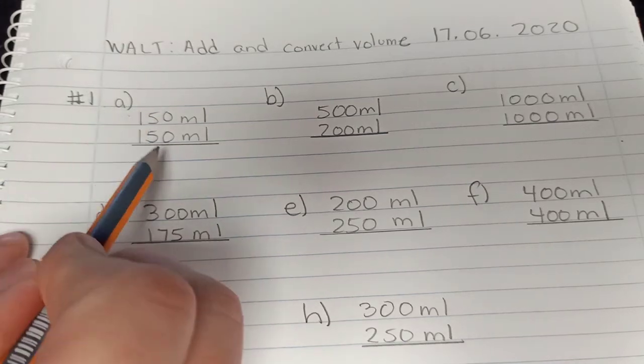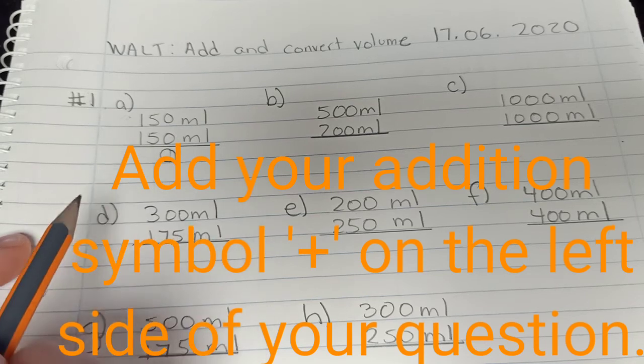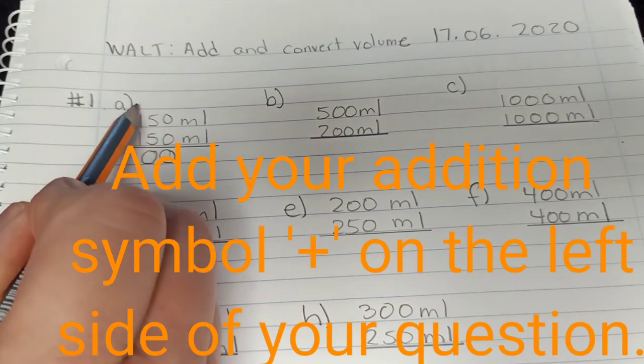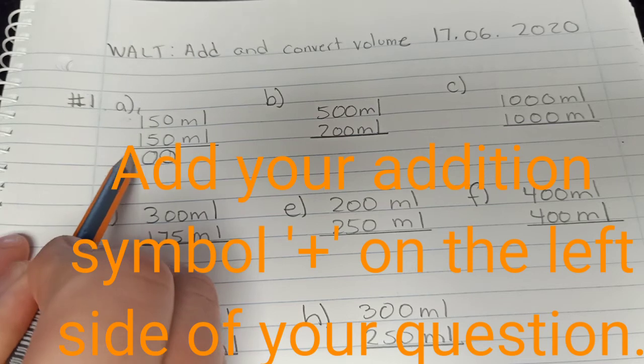Here's 0 plus 0, I'm going to write down my 0. 5 plus 5 is 10, I'm going to write down my 0. I'm going to put the 1 here, and then 1, 2, 3.